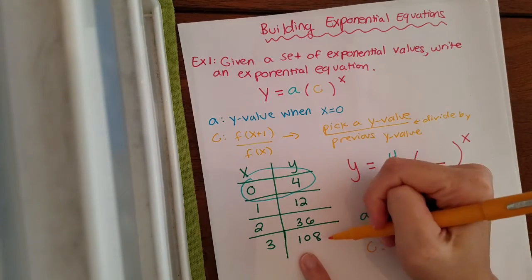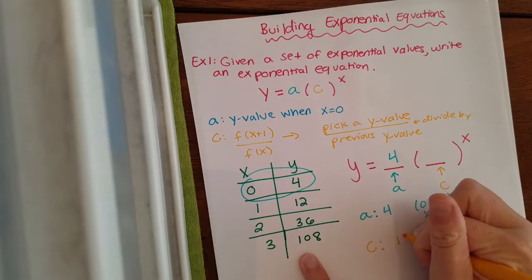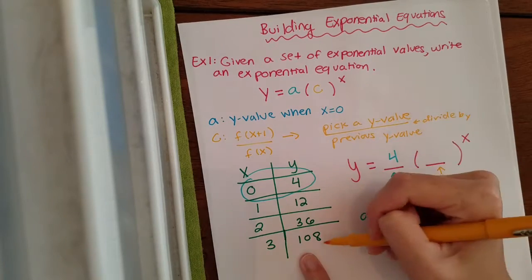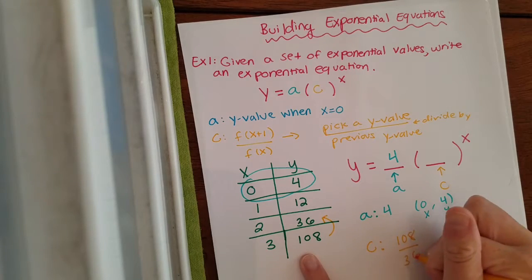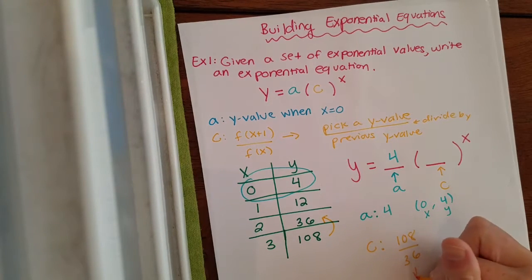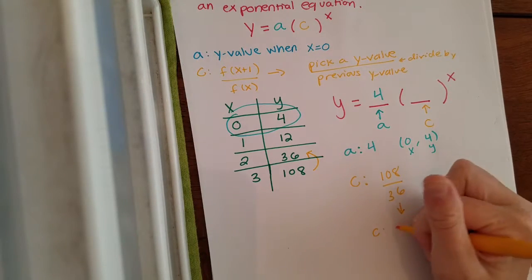So I'm just going to start with the last one to make things easy. So you could pick a y value, so I could pick 108 and divide it by the previous y, which the previous y is 36, which when you reduce that down, the c value is going to be a 3.